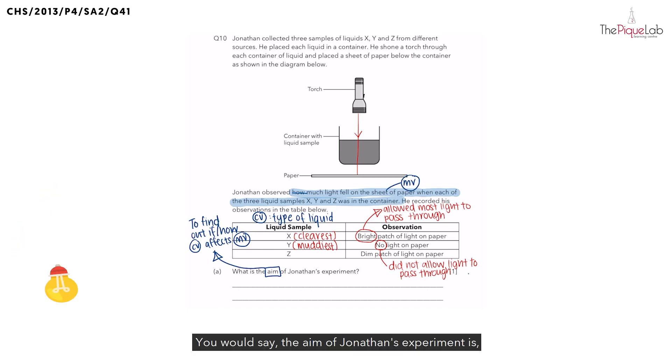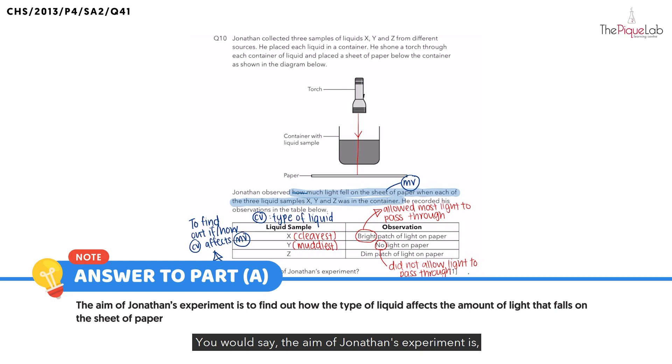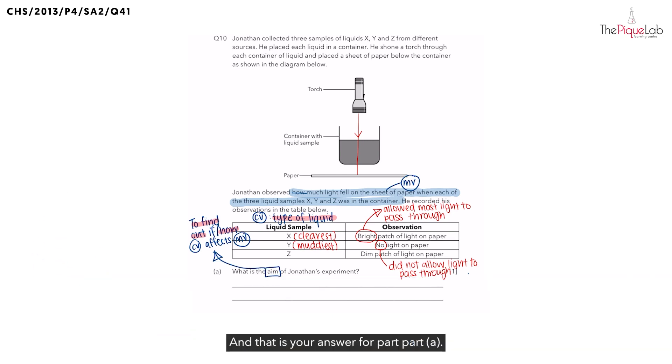You would say, the aim of Jonathan's experiment is to find out how the type of liquid affects the amount of light that falls on the sheet of paper. And that's your answer for part A.